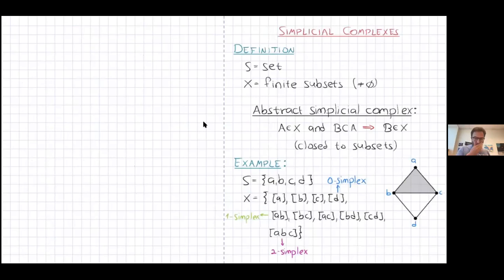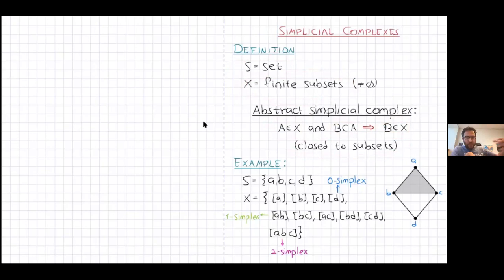The main object we're going to work with, instead of a graph, is the simplicial complex. An abstract simplicial complex is constructed as follows: you start with some set, and the complex is a collection of finite non-empty subsets. The only requirement is that this collection is closed under taking subsets — if A is in your collection and B is a subset of A, then B is also in the collection. Visually, if you have a triangle, you must also include its edges and vertices. This is an abstract simplicial complex.